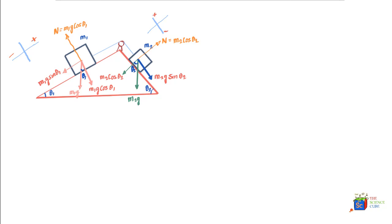Now let's apply Newton's second law of motion to mass M1. There is tension T in the string, which is a pulling force pulling M1 up the incline. Likewise, tension T also acts on mass M2, pulling it upward along its incline, since it's a single string on a frictionless pulley. Newton's second law states that the net force acting on a body equals the product of its mass and the acceleration induced.